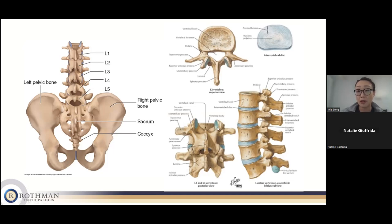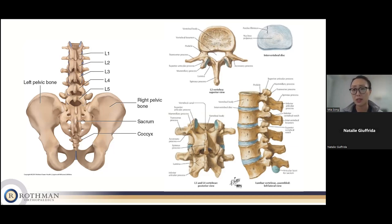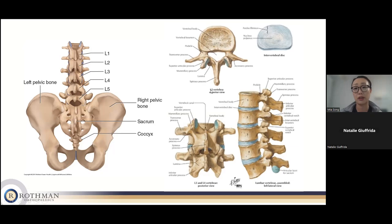In between each vertebra you also have the facet joints, which I think of like knuckle joints that bear motion as you move and twist. In the cross-section of a vertebra, the center hole is the vertebral foramen, where your spinal cord and cerebrospinal fluid run through, and your nerves exit on either side.